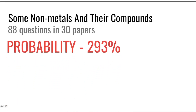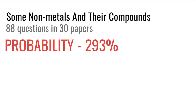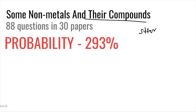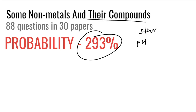Some nonmetals and their compounds — with 88 questions in 30 papers and about three questions per paper — covers sulfur, pH of different compounds, the contact process and its catalyst. Questions are usually about properties: making sulfur dioxide, sulfur trioxide, and so forth.